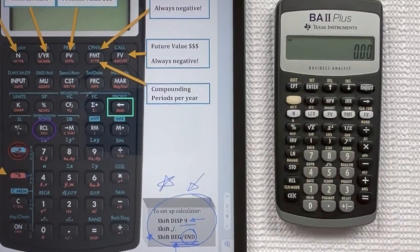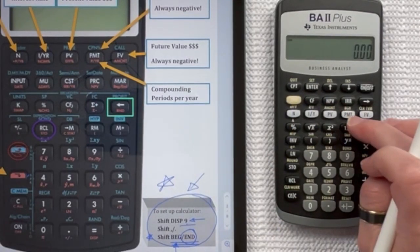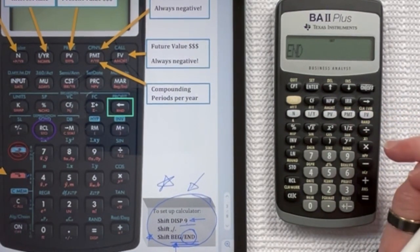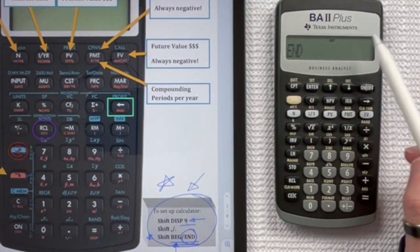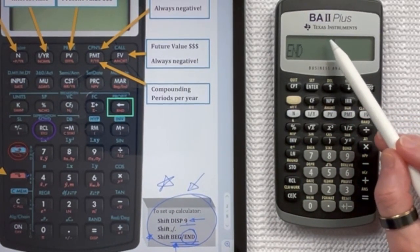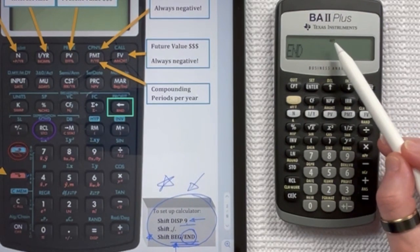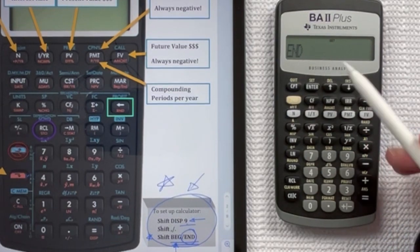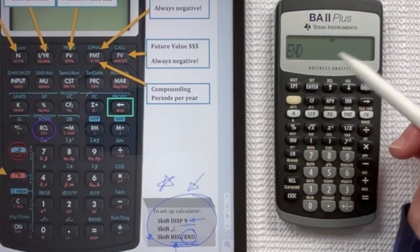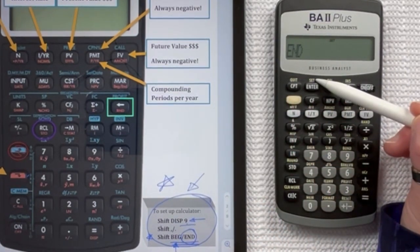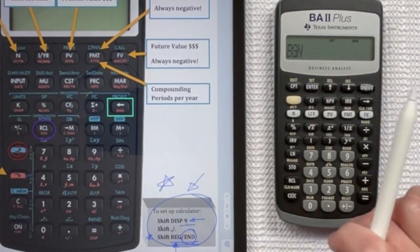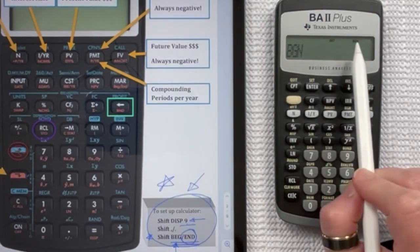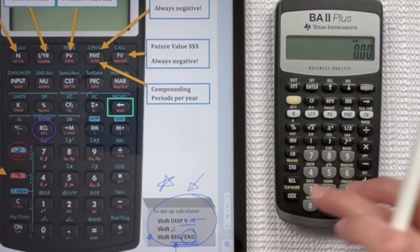So we're going to press the second function and then we're going to go to the payment key because it has BGN, so begin above it. And so you notice that it has the word SET here above and that's how you actually change from the ending of the period to calculate interest to the beginning of the period. So we would use that SET function that's up here above the ENTER. So in order to change that, we would hit our second function and SET. And you see that it changed it to BGN.